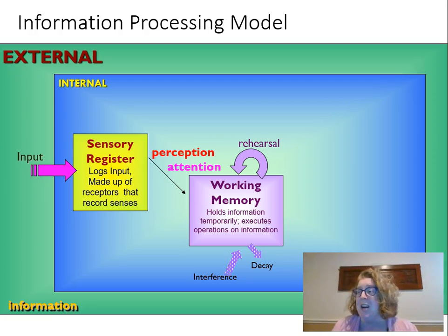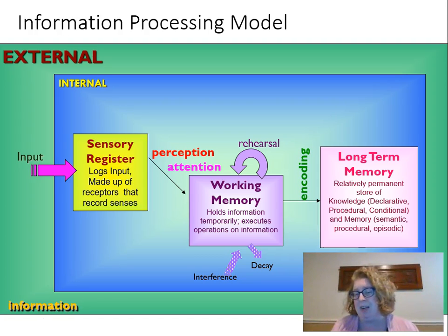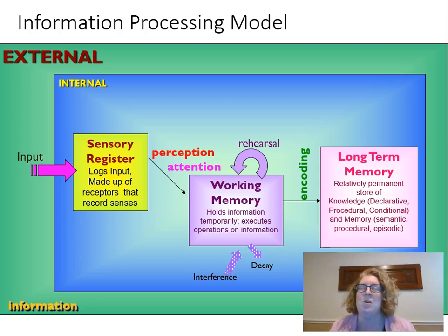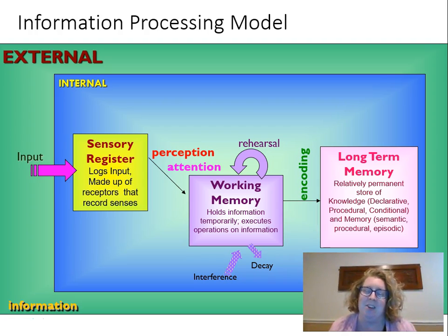If we want to keep something longer than just working memory, we have to encode it into long-term memory. There are three parts of our relatively permanent long-term memory: declarative, procedural, and conditional. Declarative is the things we know; procedural is knowing how to do things; conditional is knowing when to apply which type. For example, someone with amnesia might not remember the word 'bicycle,' but if you gave them one they might remember how to ride it — that procedural knowledge is stored in a different part of the brain than declarative knowledge.